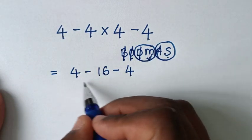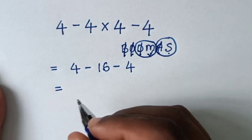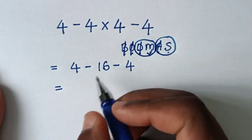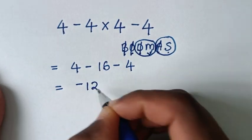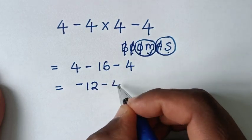So we start with this subtraction first. Then it will be equal to 4 minus 16 is negative 12, then minus 4.